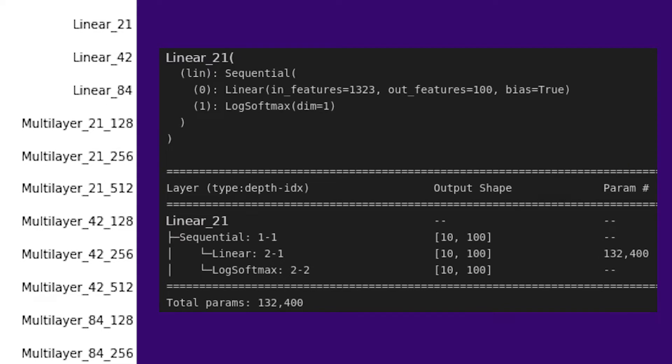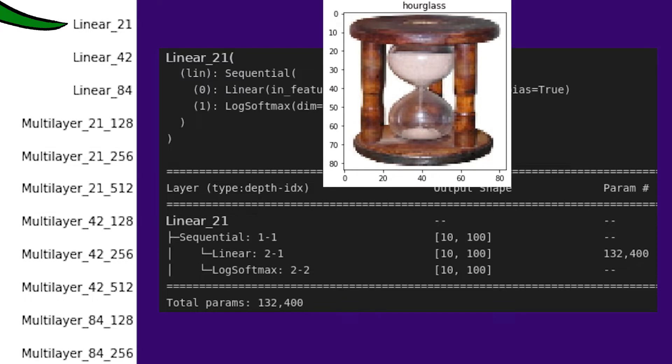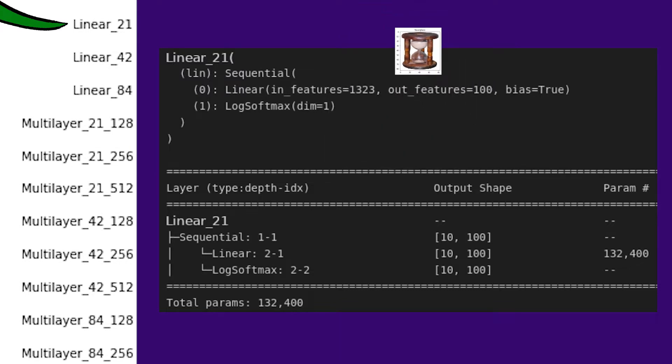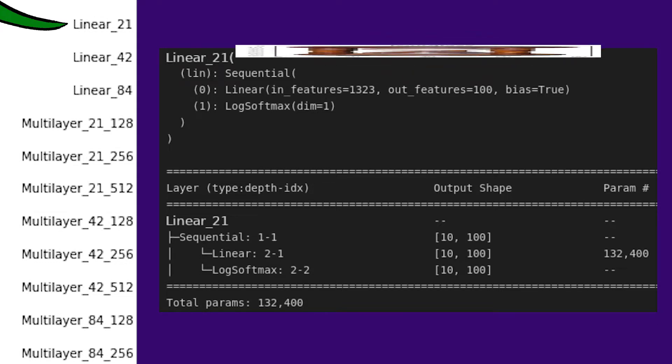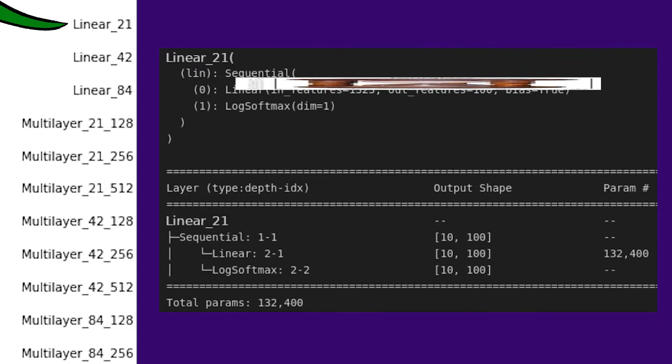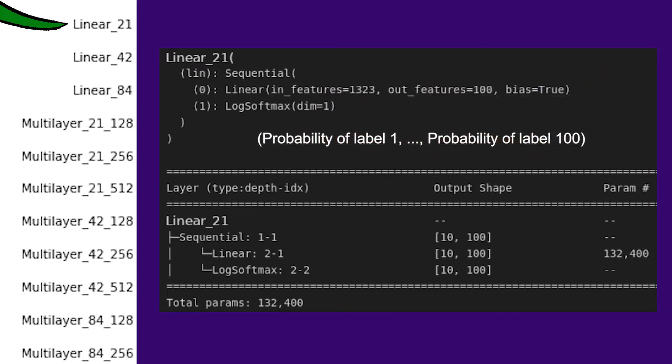This is the simplest model. I call it a Linear 21, because it shrinks down the 84x84 images to 21x21. Then it flattens them into a vector of length 21x21x3, because the models are red-green-blue. That vector is fed through one linear layer, which turns it into a vector of length 100, of one probability for each of the 100 labels.